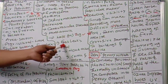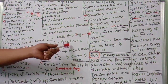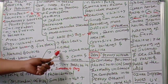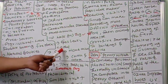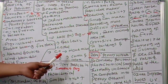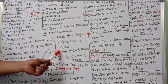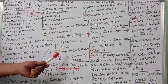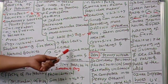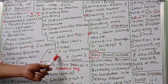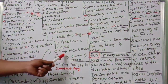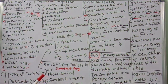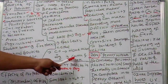Gas leaks are also lethal — the Bhopal disaster involved methyl isocyanate release, killing many people. Carbon monoxide from unburnt fossil fuels disrupts oxygen transportation by binding to hemoglobin. A small amount causes headache; too much leads to coma and death. Carbon monoxide must be controlled as early as possible because it leads to death and coma.